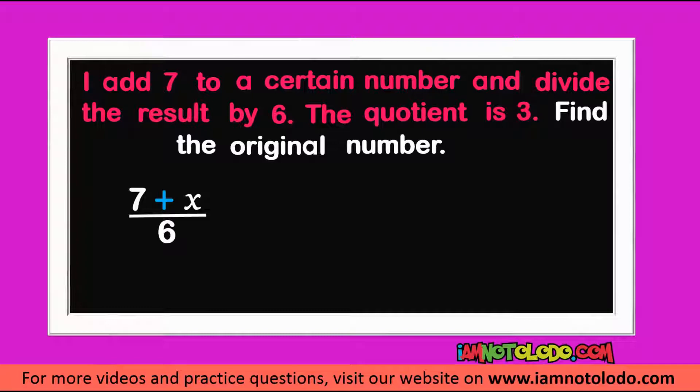three. Quotient means what you get after dividing this by this, so it is three. Find the original number.